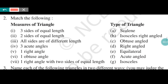This is question number two of exercise 5.6. Before this, the definitions of different types of triangles are given. According to the sides: if no sides are equal, it is a scalene triangle; if two sides are equal, it is an isosceles triangle; if all three sides are equal, it is an equilateral triangle. According to the angles: if all three angles are acute, it is an acute angle triangle; if one angle is obtuse, it is an obtuse angle triangle; and if one angle is a right angle, it is a right angle triangle.